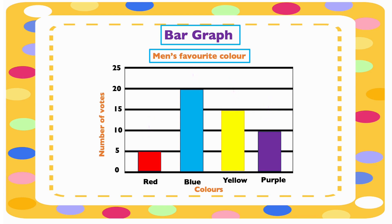Now let's find out the color that has the highest votes. Looking at the bars, blue has the highest votes — it has got 20 votes. And which color has the smallest votes? Red — red has got only five votes.